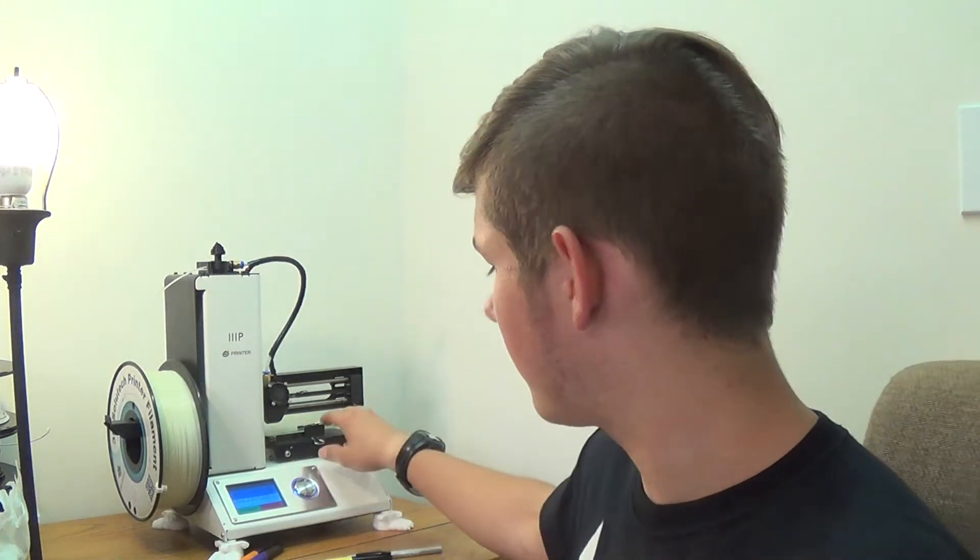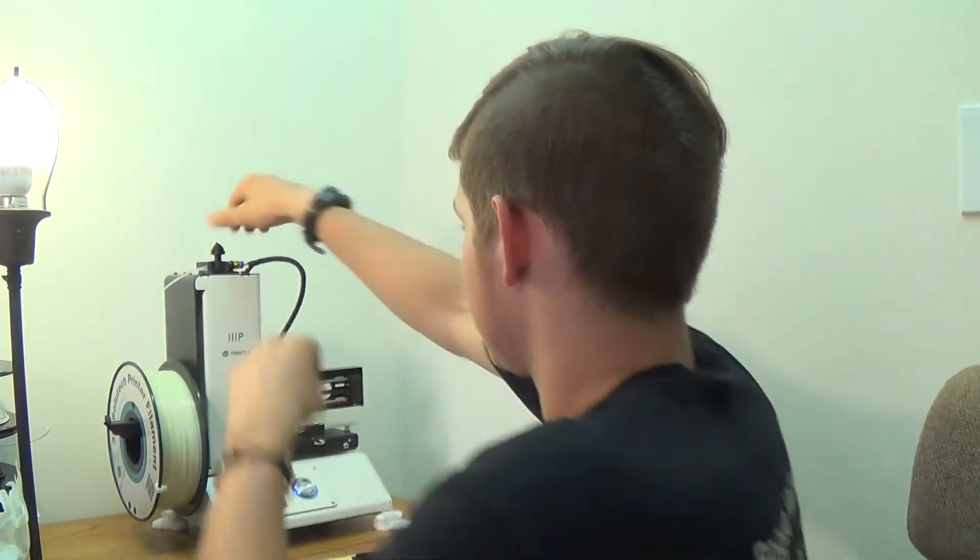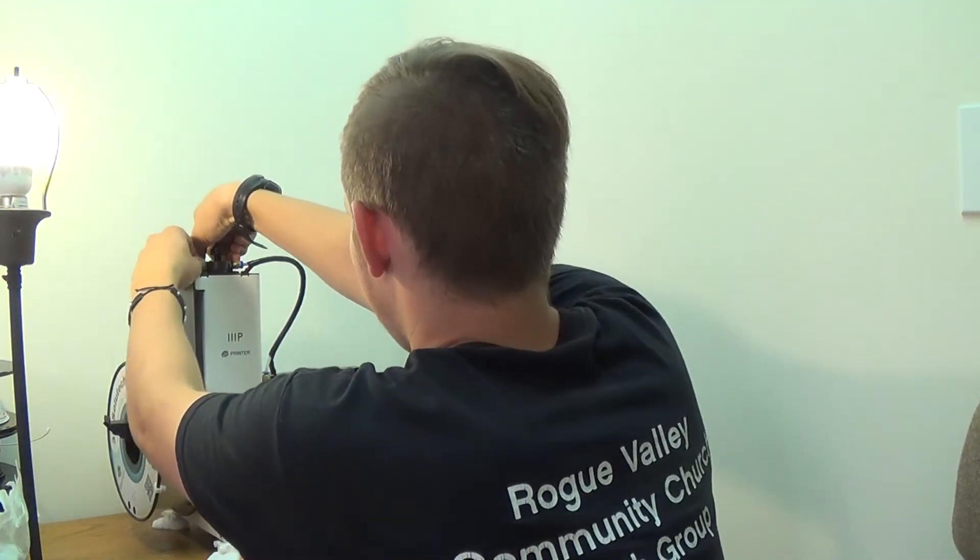I'm going to use glow-in-the-dark because it's a lighter color and kind of see-through. So I'll just use that rather than using the white ABS, which takes a really long time for the build plate to heat up.